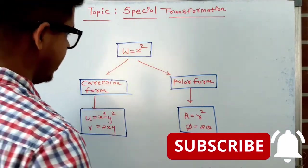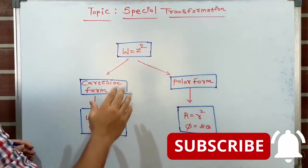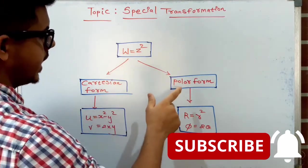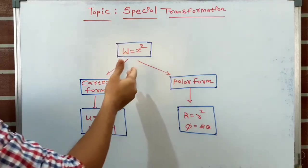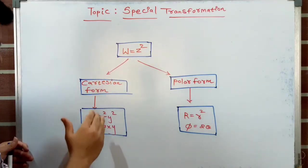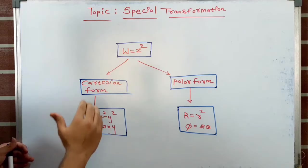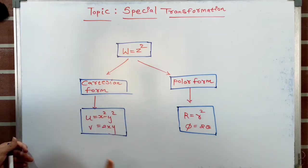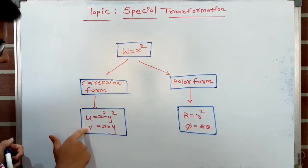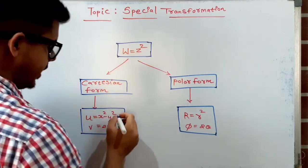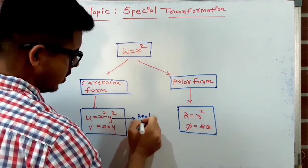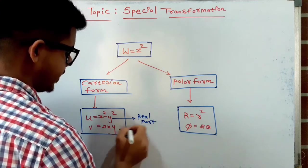The first special transformation is w = z². This transformation has two parts: first is the Cartesian form and second is the polar form. In Cartesian form, w = z² can be written as u = x² − y² and v = 2xy, where u is the real part and v is the imaginary part.